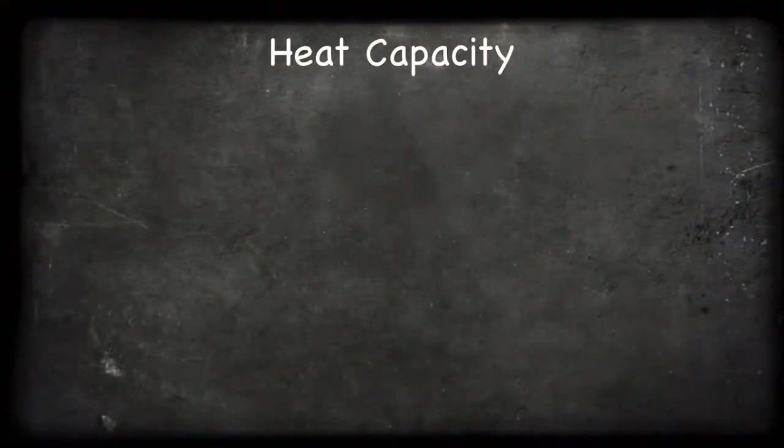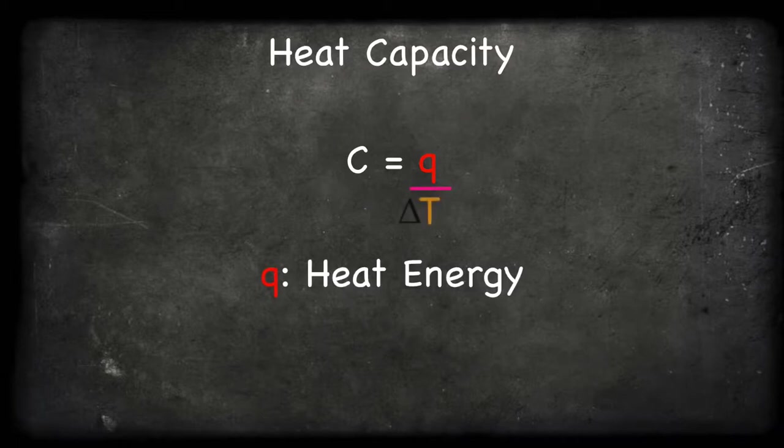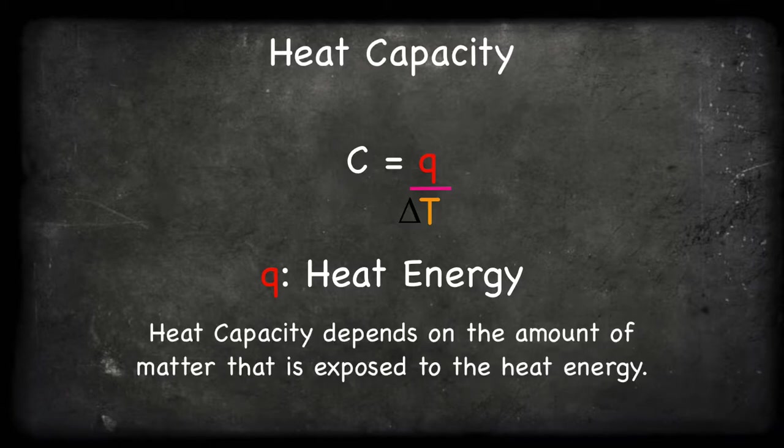Heat capacity is represented by the variable C. It is equal to the heat energy supplied to an object, which is Q, divided by its change in temperature, delta T. An object's heat capacity depends on the amount of the object exposed to the heat energy.